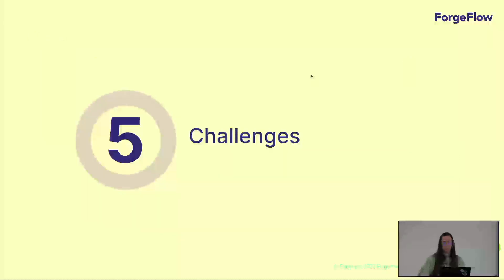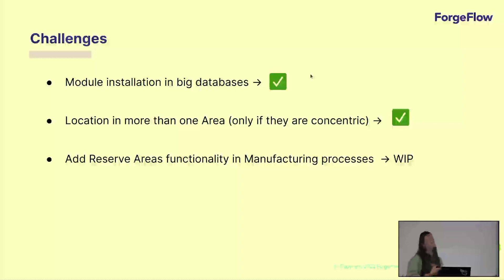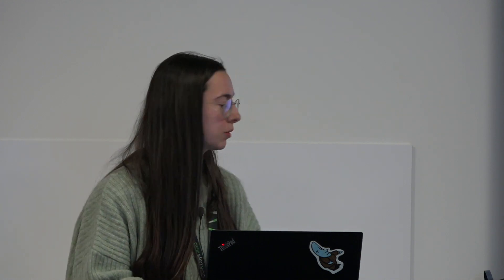That was the demonstration. The challenges we faced during this module were mainly the installation in big databases, because once you install this module a reservation area is created for each warehouse, and it was challenging in databases with a lot of moves and a lot of reserved quantities locally to populate these area reservations — but we managed to do it. Also, at the beginning our idea was to only have one area for each location, but we decided the best way was to have them concentric. Finally, it's a work in progress, but we are working on implementing and adding integration with manufacturing processes, so wherever a manufacturing order is created it also reserves inside the areas.